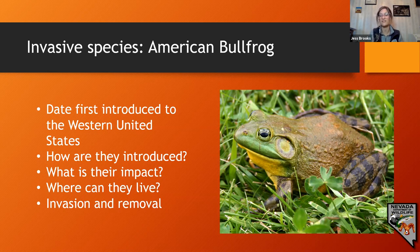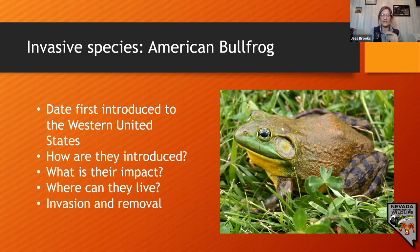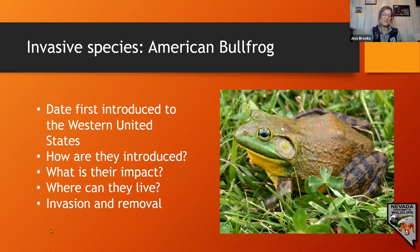Draining ponds or water resources can be one method for dealing with bullfrog invasion, but bullfrogs can just pick up and move when that happens, whereas it would hurt native species incredibly. That's how invasive species, particularly the American bullfrog, can have a devastating effect on native species and specifically on the Amargosa toad.